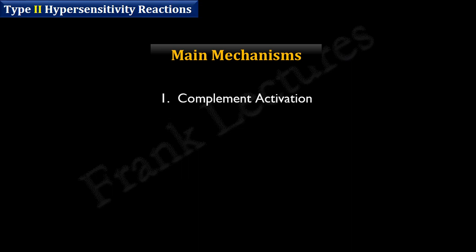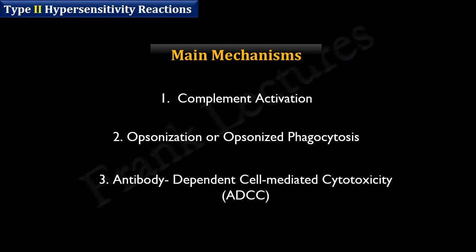The main mechanisms of type 2 hypersensitivity reactions are complement activation, opsonization or opsonized phagocytosis, and antibody-dependent cell-mediated cytotoxicity. We have covered these mechanisms in detail earlier on this channel; in this lecture we will study them in brief.